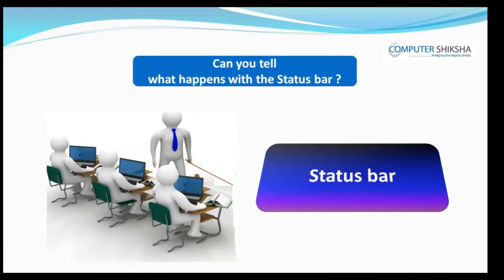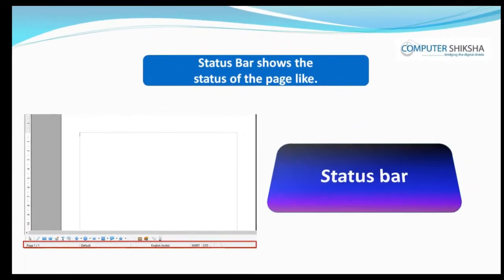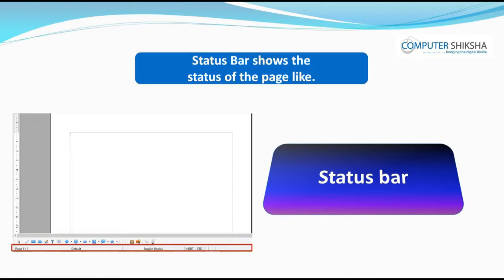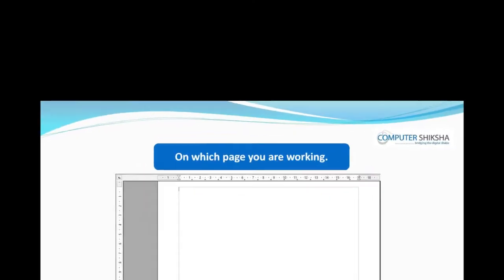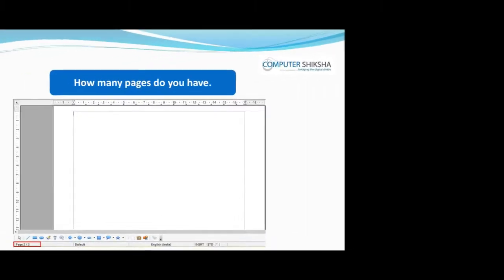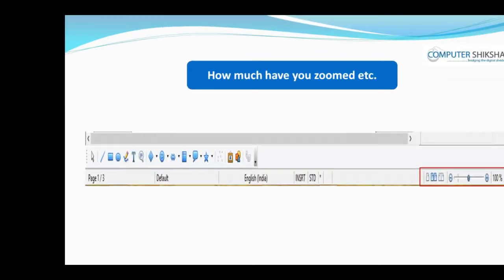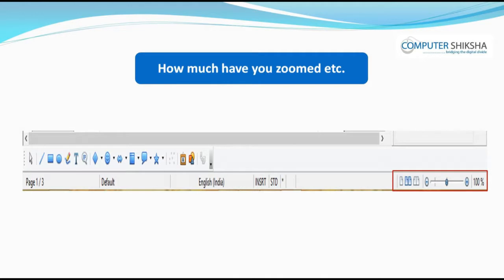Can you tell what happens with the status bar? The status bar shows the status of the page, like on which page you are working, how many pages you have, which language you are using, and how much you have zoomed.